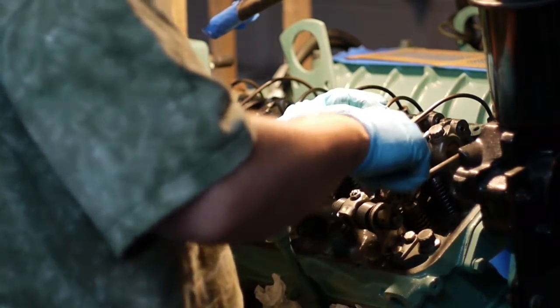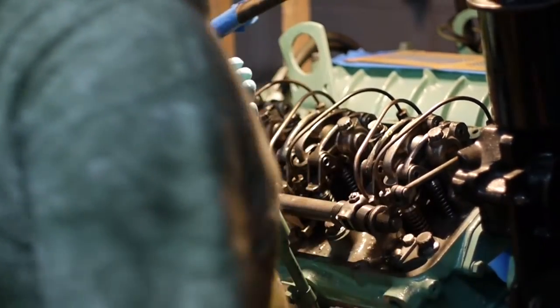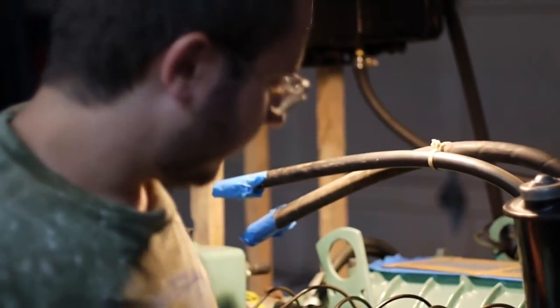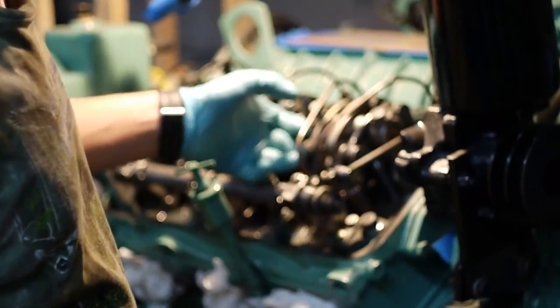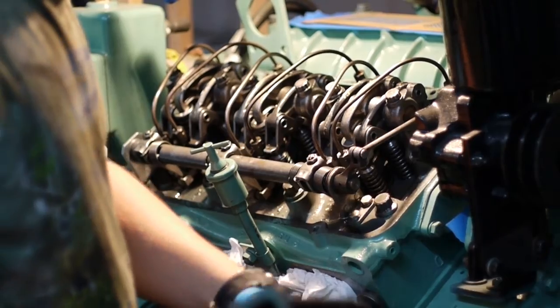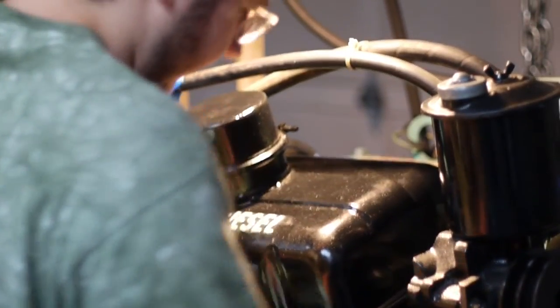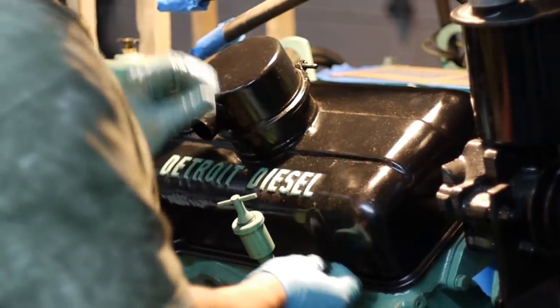That's basically the whole assembly. We can go ahead and reinstall the valve cover. Just verify that the valve bridges are seated properly above the valves. You can install the valve cover and then the Phillips retaining screws.